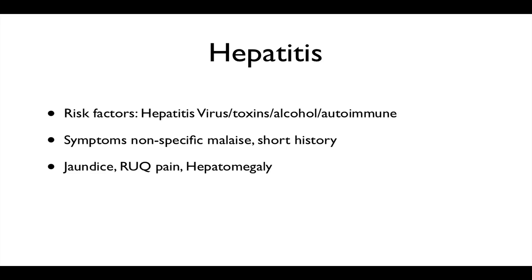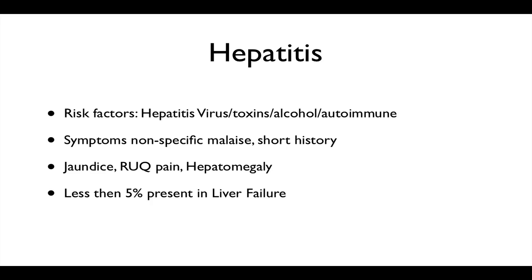It can present with jaundice, right upper quadrant pain, and hepatomegaly. True liver pain occurs when you have expansion into the liver capsule, which causes pain — you get that in acute onset hepatomegaly.